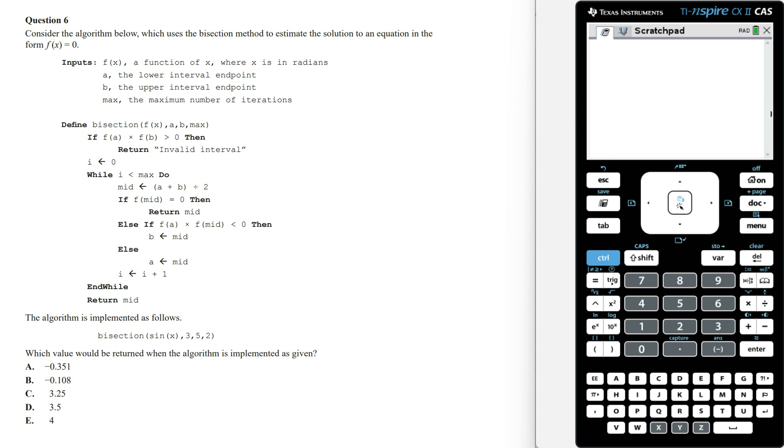Consider the algorithm below which uses the bisection method to estimate the solution to an equation in the form f of x equals 0. The algorithm is implemented as follows. Which value would be returned when the algorithm is implemented as given?